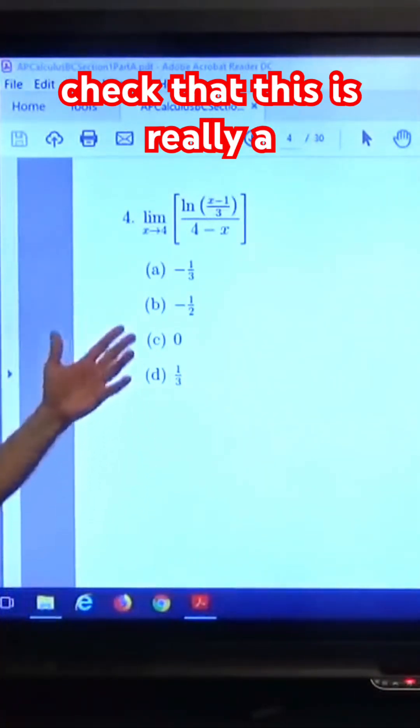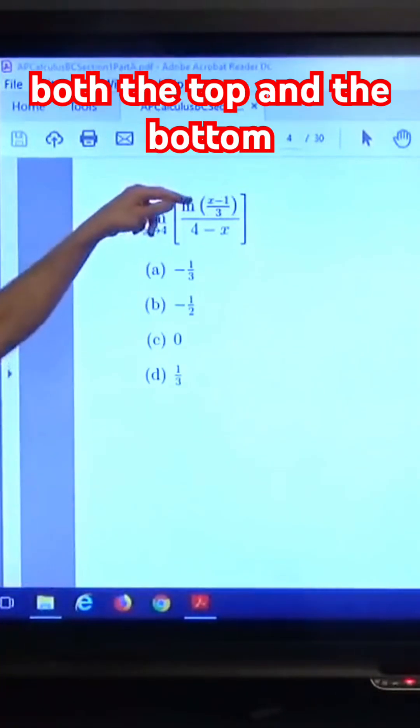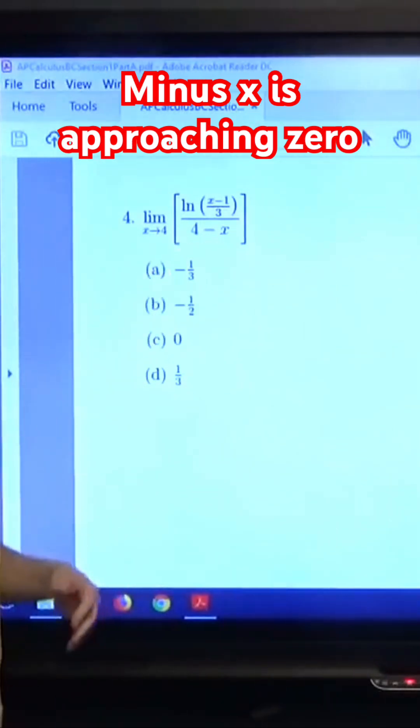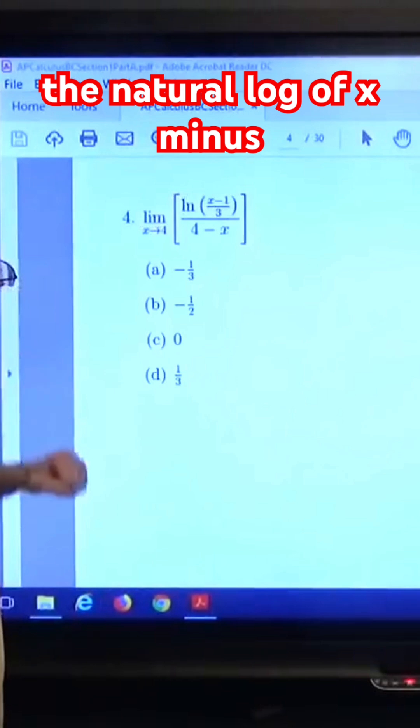You need to check that this is really a 0 over 0 indeterminate form. Are both the top and the bottom going to 0 as x approaches 4? Certainly the bottom, 4 minus x, is approaching 0 as x approaches 4. What about the natural log of x minus 1 over 3?